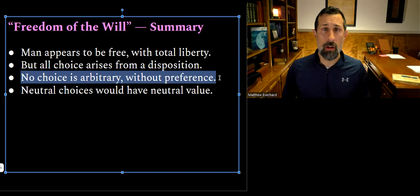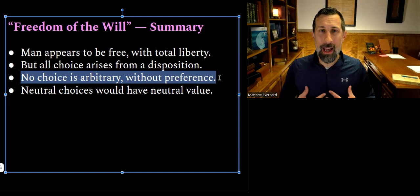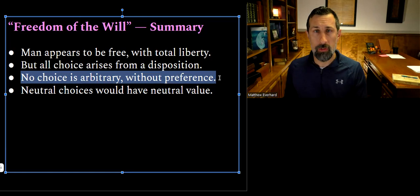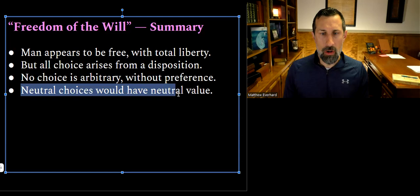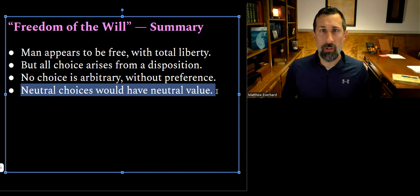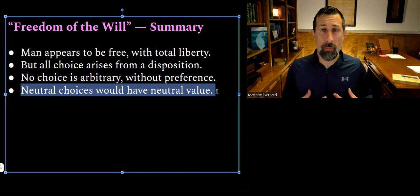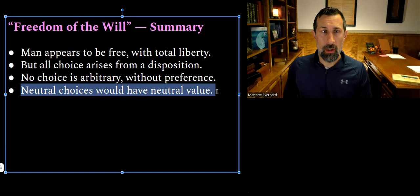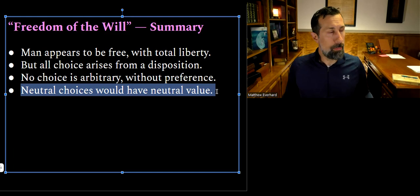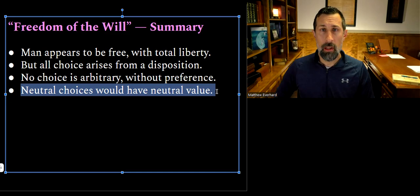Edwards goes very strong in this book to indicate that complete neutrality of the will is actually a myth — that's what the free will argument depends on, that the human being is autonomously neutral in his choosing capacity. But Edwards says no. We choose because of a disposition within us. He makes a very important distinction between natural ability and moral ability. The Arminians accuse Calvinists of saying that without free will God is compelling us to sin. Edwards says that's not what Calvinism implies.